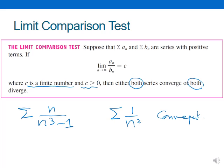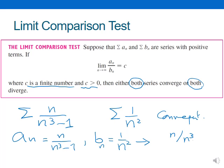So if we apply this rule to this problem using the limit comparison test, where an is the given series n over n cubed minus 1, and bn is the comparison series 1 over n squared, I obtain the ratio an over bn: that is n over n cubed minus 1, divided by 1 over n squared. Let's simplify this on another slide.